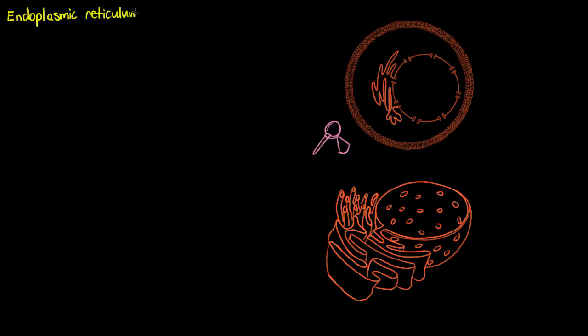We have our eukaryotic cell and we can see the zoomed in structure of what the endoplasmic reticulum is going to look like as a whole. We've got our eukaryotic cell right here with the nucleus within our cell and our endoplasmic reticulum extending from that nucleus.